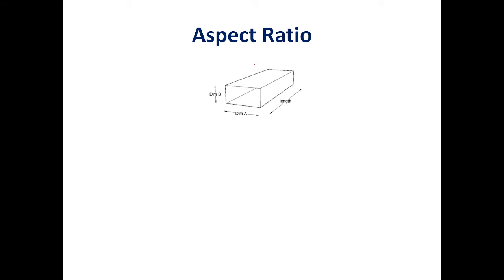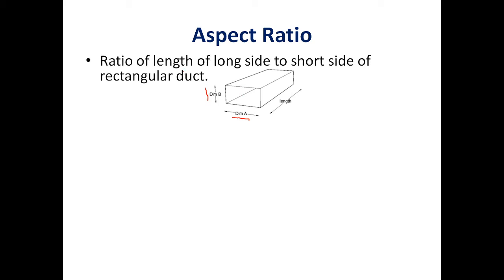Now let us look at aspect ratio in detail using a diagram of a rectangular duct. The longer side is 'a' and the shorter side is 'b'. The aspect ratio is defined as the ratio of the long side to the short side, so aspect ratio equals a divided by b.